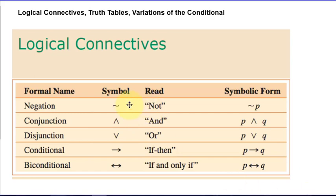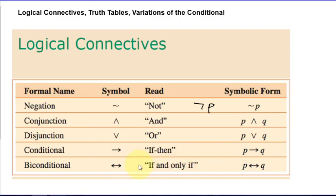The negation uses the tilde symbol. Some books use a different symbol, so you might see negation written another way — but in either case you say 'not P.' This is the symbol for AND, this is the symbol for the conditional, often read as an if-then, and we'll get into different variations on conditionals. We also have 'if and only if,' which is called the biconditional, and there are many different ways to say it in English.